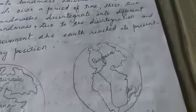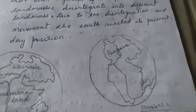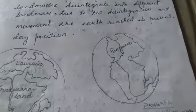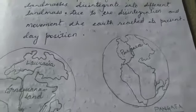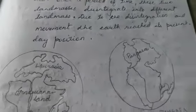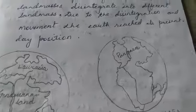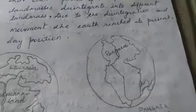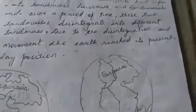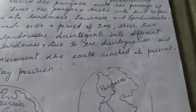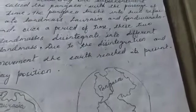In this way he explained that millions of years ago, our earth did not look like it does now. It was one united landmass, and with the period of time that united landmass broke out into different landmasses.